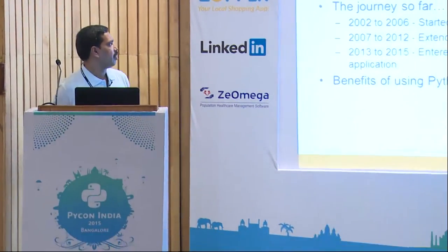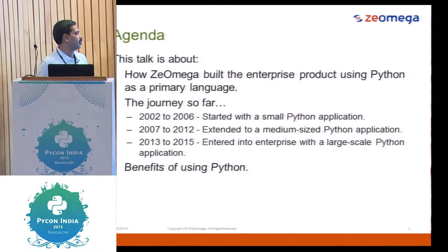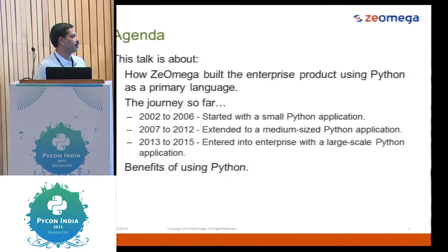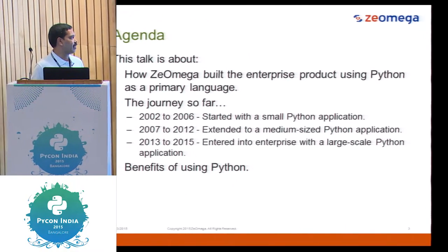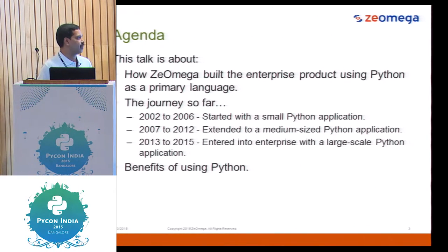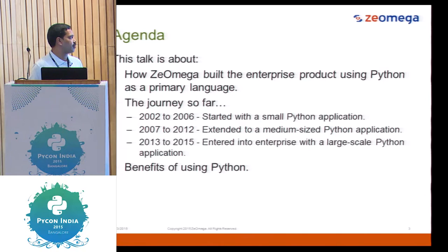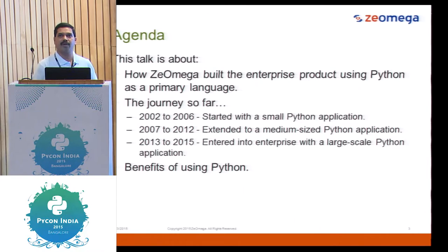We'll be talking about how we created a Python enterprise product using Python as business logic. GeoMega started in 2002 and started using Python as our main primary language. We started with a small product with Python as the primary language, and from 2002 to 2006, that small Python application worked for us and served our business needs.